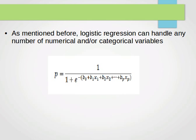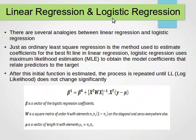There are several analogies between linear regression and logistic regression. Just as ordinary least square regression is the method used to estimate coefficients for the best fit line in linear regression, logistic regression uses maximum likelihood estimation, the MLE, to obtain the model coefficients that relate predictors to the target. Because we're using probabilities now, after this initial function is estimated, the process is repeated until the log likelihood does not change significantly.